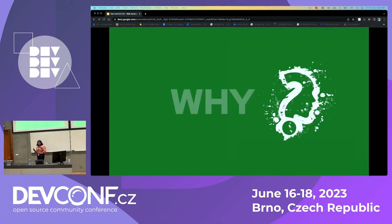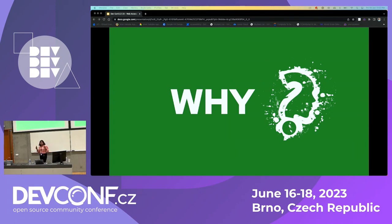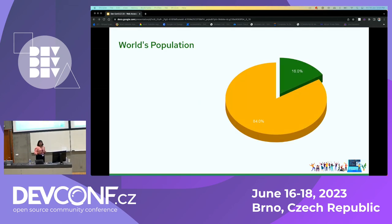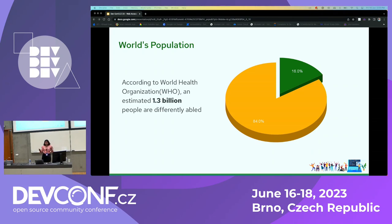Now let's understand the why. Why should we create accessible applications? We know that creating accessible applications involves time, effort, and money — so why should we create them? According to the World Health Organization, around 1.3 billion people are differently able. That means one in six of us. These users are unable to use applications only because we created them without keeping their requirements in mind. Isn't that unfair that we ignore the requirements of this many users?